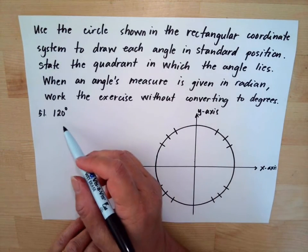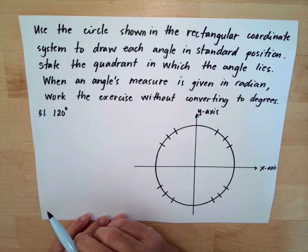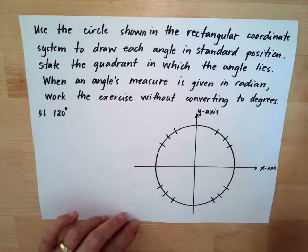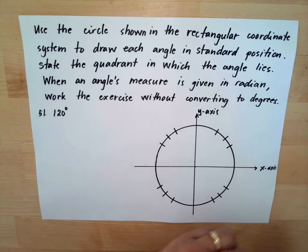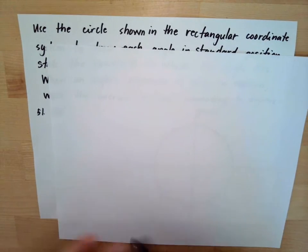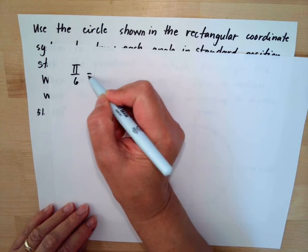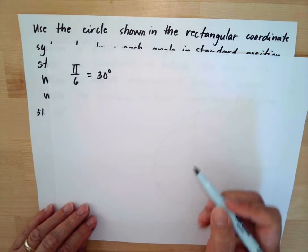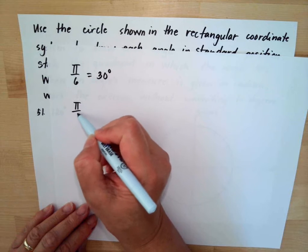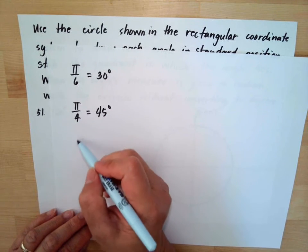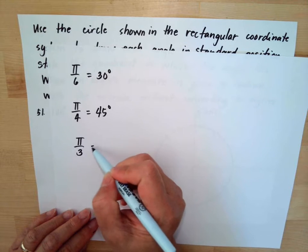We have a given of 120 degrees. You say, 'oh it's not radians, so will I convert it to radians?' No. What you need to know is that π/6 is equivalent to 30 degrees, π/4 is equivalent to 45 degrees, and π/3 is equivalent to 60 degrees.